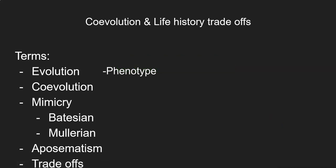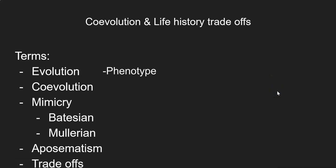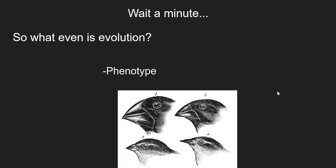The key terms are evolution, co-evolution, mimicry — and under the category of mimicry, there is Batesian and Müllerian. There's also this idea of aposematism and trade-offs, all of which we are going to talk about. But before we talk about co-evolution, I think we need to define evolution first.